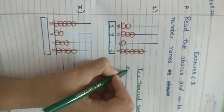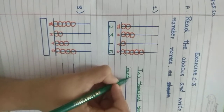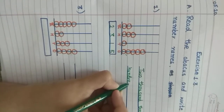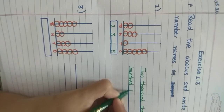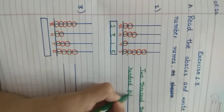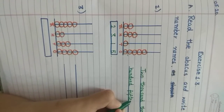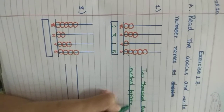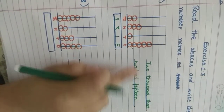What is the spelling of hundred? H-U-N-D-R-E-D. And fifteen is F-I-F-T-E-E-N. You all remember the spellings, right? So the number name for 2,315 is two thousand three hundred fifteen.